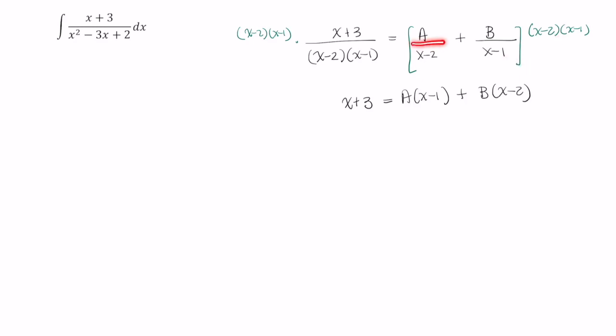So if you notice, under a, in the denominator of this first fraction, I have an x minus 2. And so what I ended up with next to a was the term that is not x minus 2, that is x minus 1. And similarly for b.